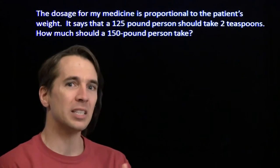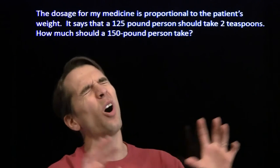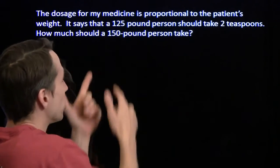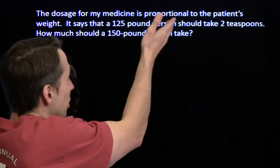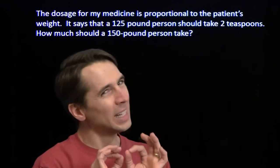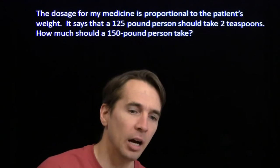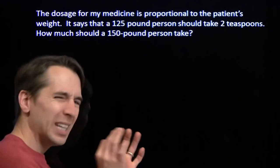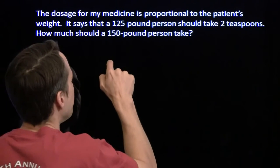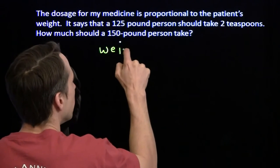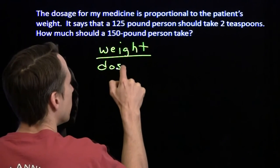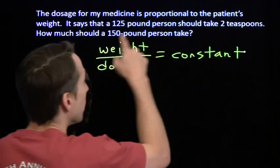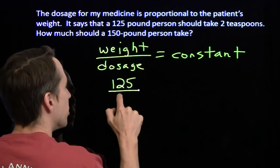I've got this very special medicine that I take to keep myself from messing up in these videos. I used to mess up these videos all the time, and had to do a whole bunch of takes until I found this very special medicine. Now on the bottle it says a 125-pound person takes 2 teaspoons, and the dosage is proportional to the weight. So you double the weight, you have to double the dosage. I want to get the dosage just right — if I don't take enough I'll keep messing up, and if I take too much I'll just be too perfect and that'll annoy everybody.